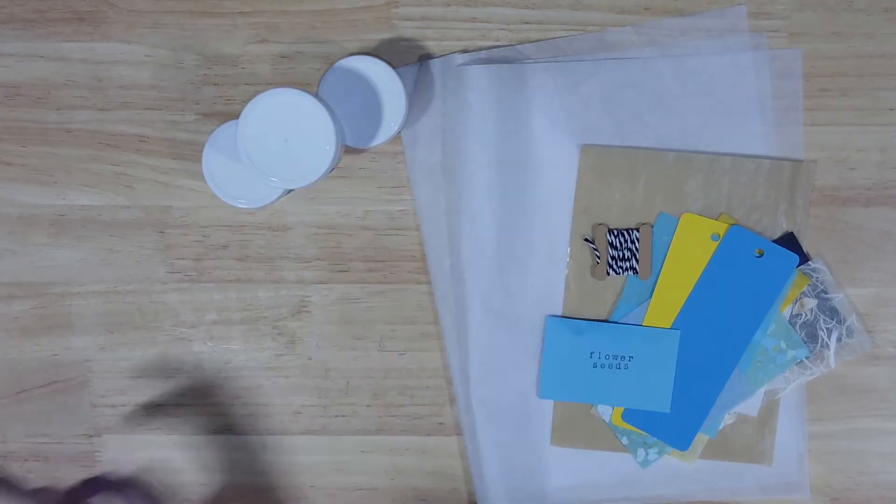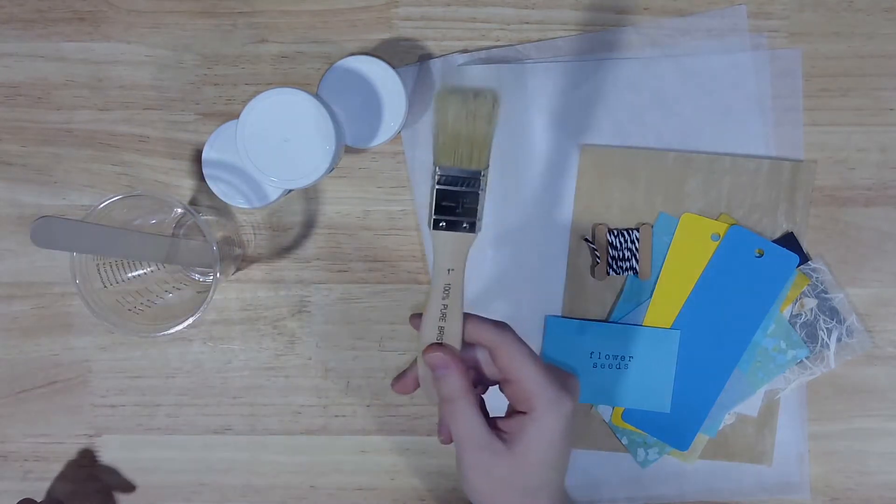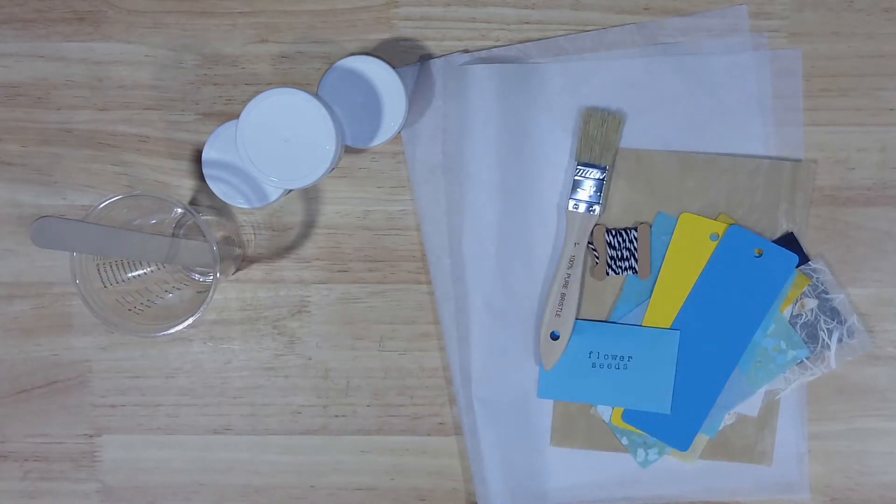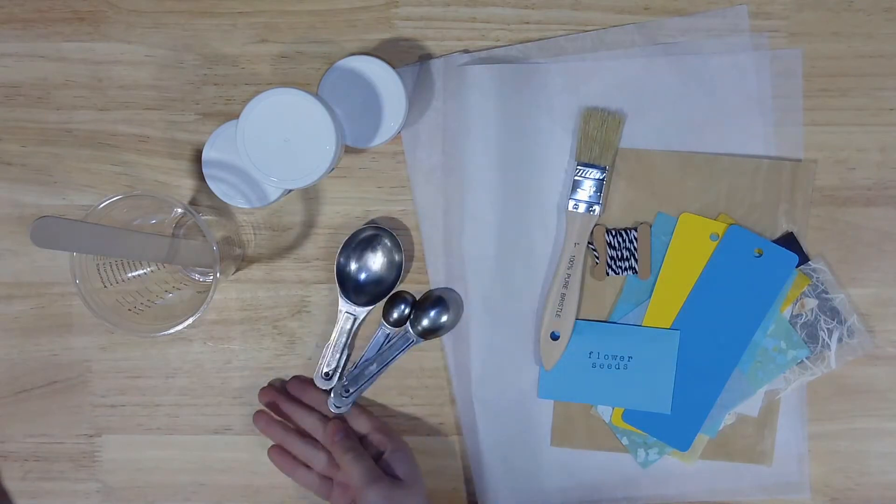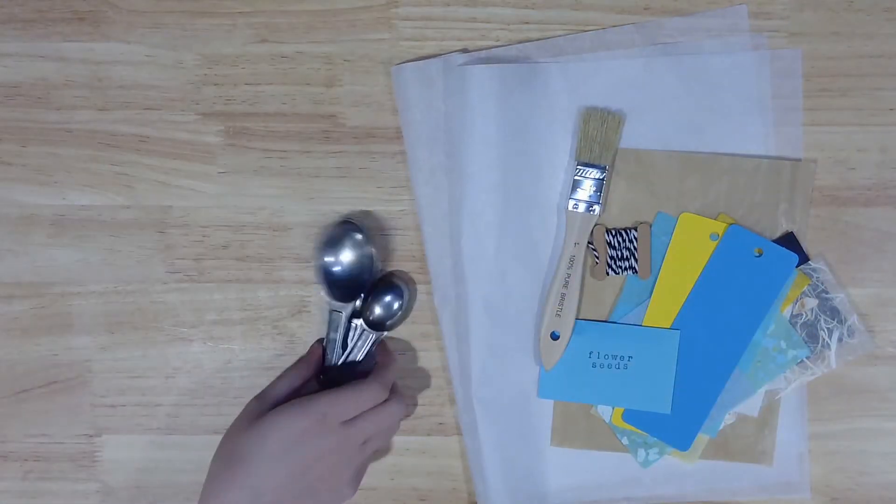A disposable measuring cup and popsicle stick mixer, and a paintbrush. From home you'll also need a stovetop and a small saucepan as well as some tablespoon and teaspoon measures. Take a moment to gather your materials and then we'll get started.